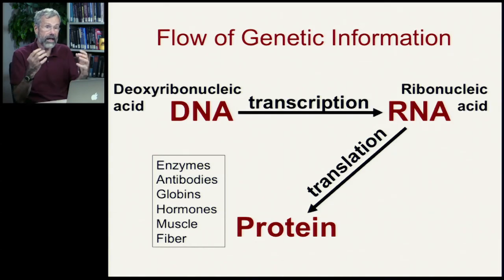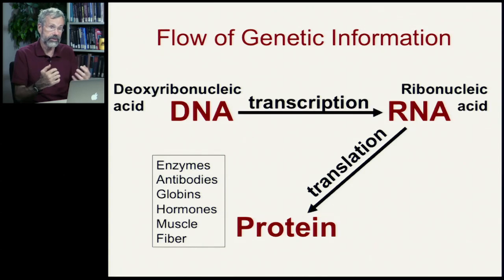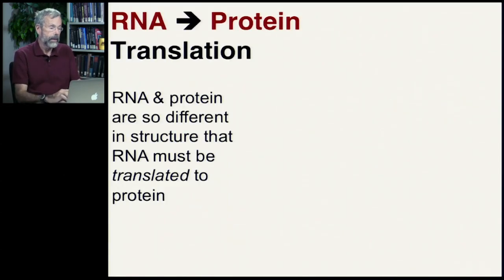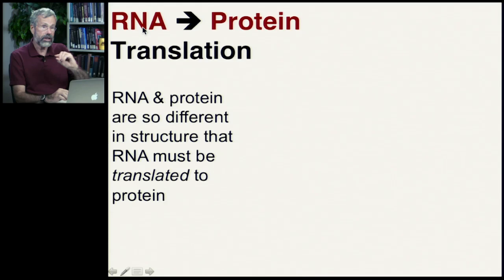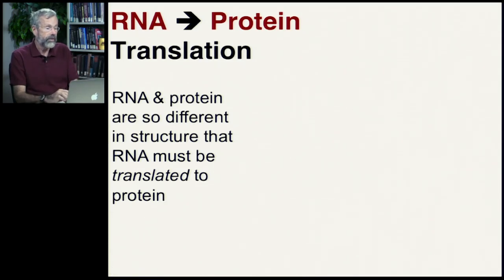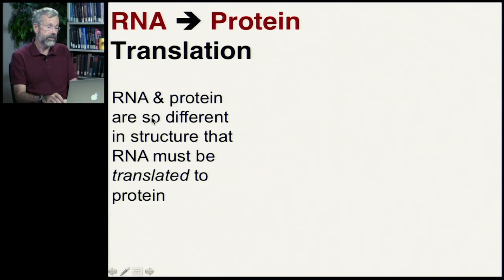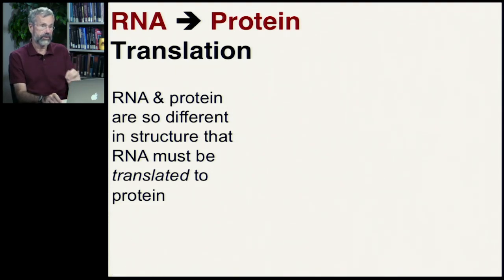This is where we're going to have the different traits that are really important in the evolutionary process, and of course in our daily lives. In translation, we're going to go from RNA — a long chain of nucleic acids, just like DNA — to proteins. But proteins are made up of very different building blocks. RNA and protein are so different in structure that RNA must be translated to protein.